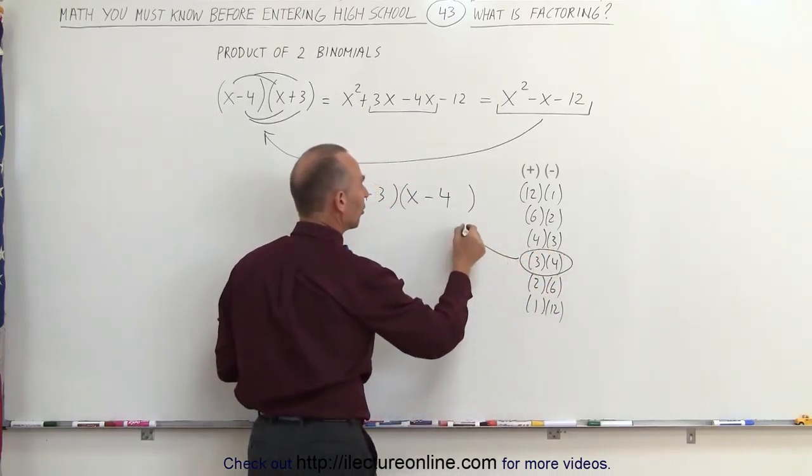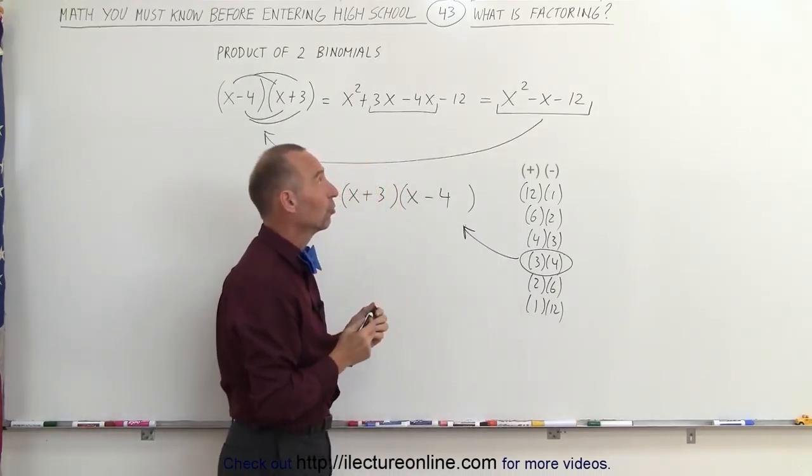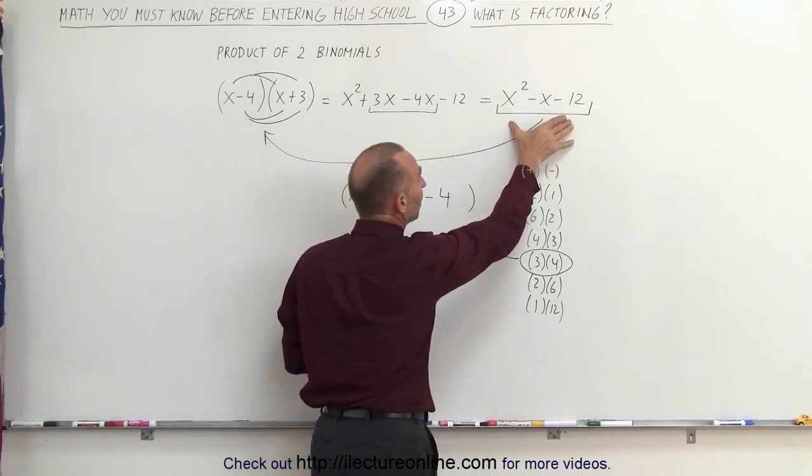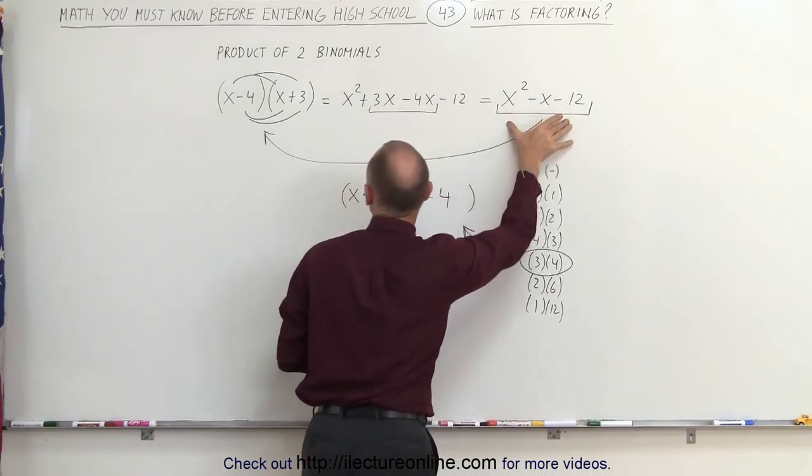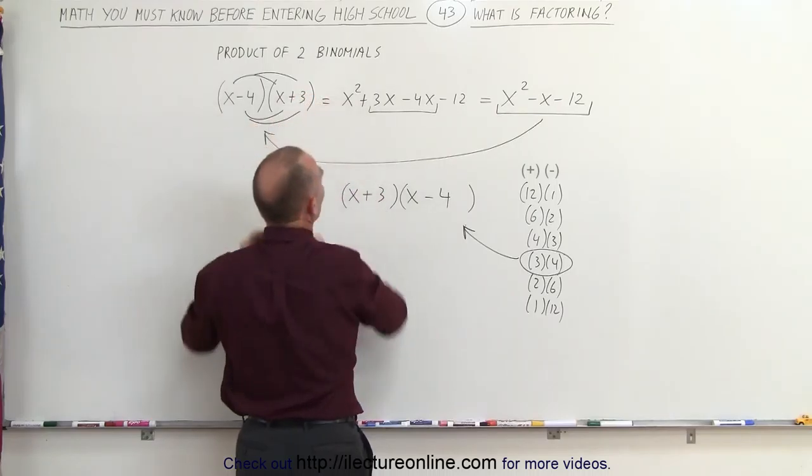We already know of course that a minus 4 and a plus 3 is the right answer. So when I put a minus 4 here and a plus 3 there, that means this was the correct combination to find the proper factors as we call them.